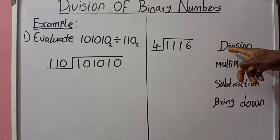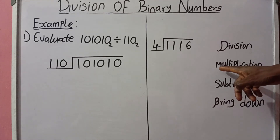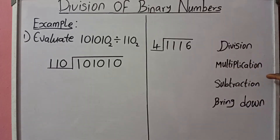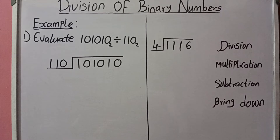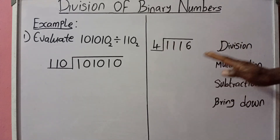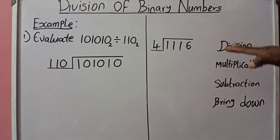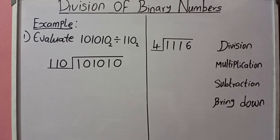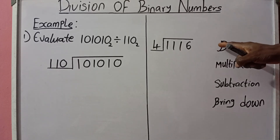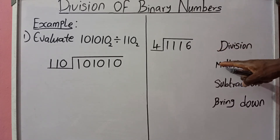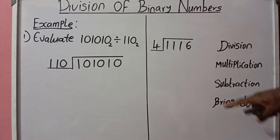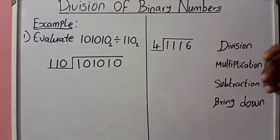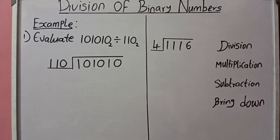In this acronym: 'Doctor' represents Division, 'Michael' represents Multiplication, 'Studied' means Subtraction, and 'Biology' means Bring down. So whenever you are resolving any question involving long division, after division we do multiplication, after multiplication we do subtraction, and after subtraction we bring down the next digit. Let's use a practice question before the main binary problem.